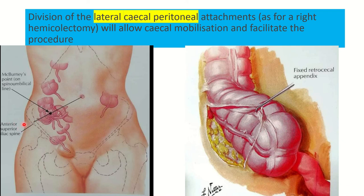Looking at another picture, a line drawn from the anterior superior iliac spine to the umbilicus shows McBurney's point — the junction of the lateral one-third and medial two-thirds of that line — where the appendix normally lies. Here we can see the fixed retrocecal appendix, and to gain access to it, we have to cut this ligament.